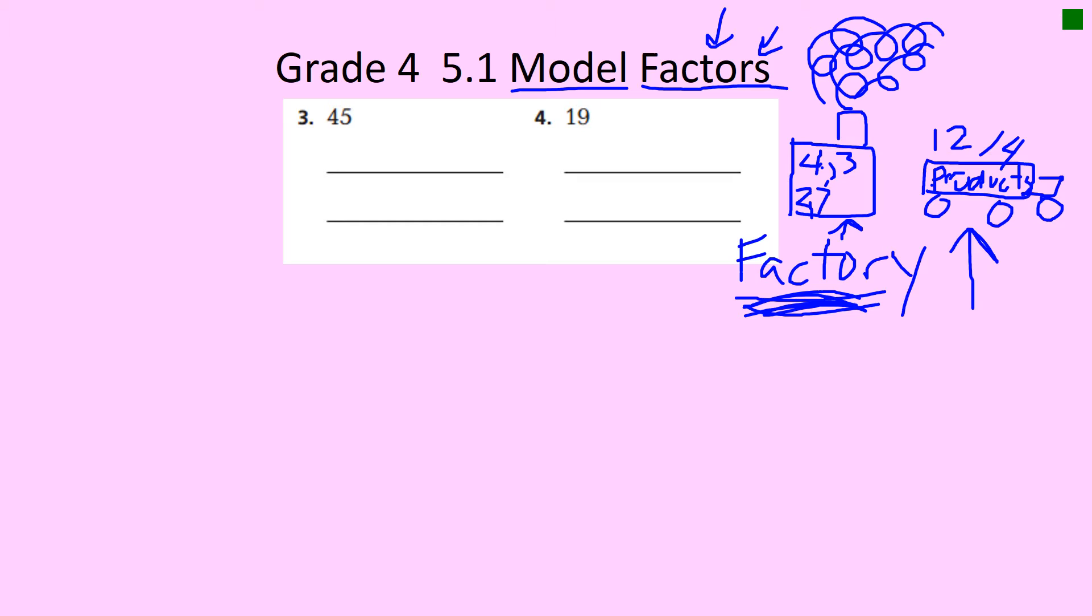So the directions on this say: Use tiles to find all the factors of a product. Record the arrays on grid paper and write the factors shown. We're going to do the best we can on this. So I've pulled out number three and number four. For number three, we have to find all the factors of 45. And sometimes a little T-chart like that is helpful to keep your factors organized.